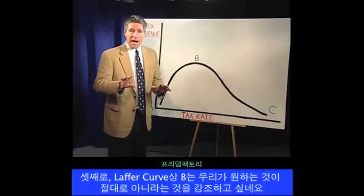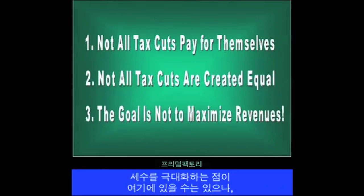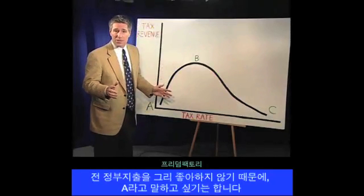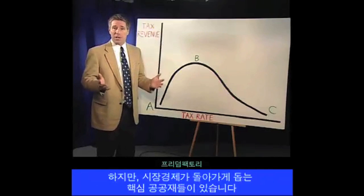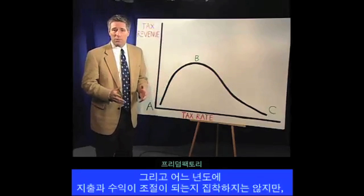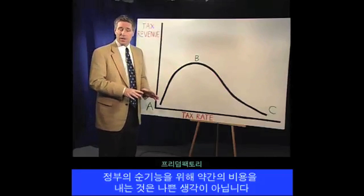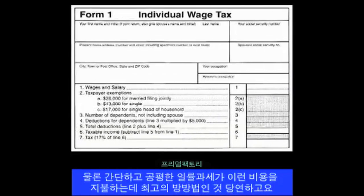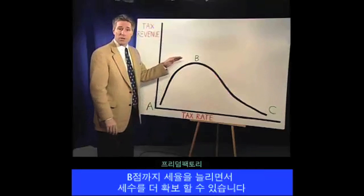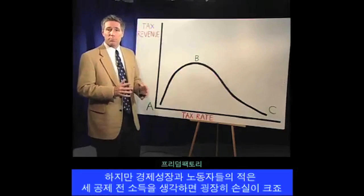Third, I want to stress that point B is not where we want to be on the Laffer Curve. The revenue-maximizing point may be at B, but the growth-maximizing point will be somewhere on the upward sloping section of the curve. There are core public goods that help a market economy function — things like rule of law, public safety, and honest courts — and a simple and fair flat tax is the best way to finance those expenses. Government could collect more revenue by raising the tax rate closer to point B, but it would be very costly in terms of lost economic growth and lower pre-tax incomes for workers.